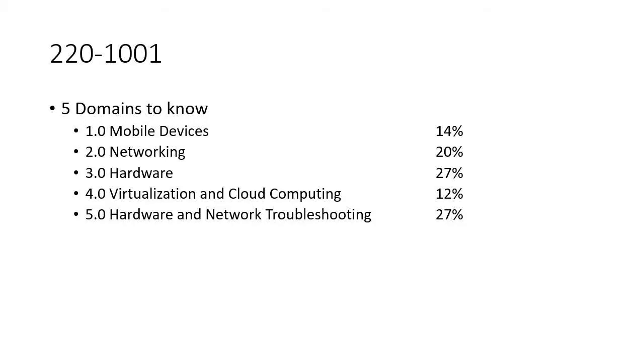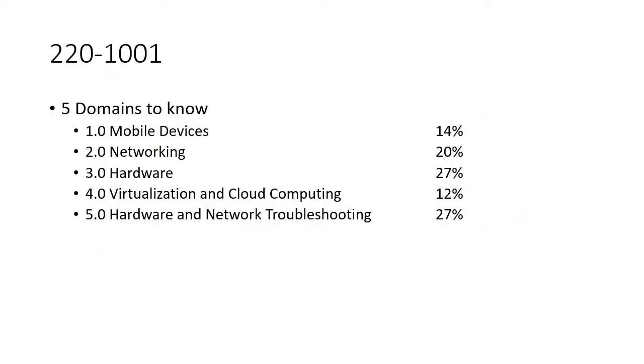I'm talking to those folks who were told yesterday they need to go get A-Plus certified in 30 days. You've got to think — maybe they have family, work, cheerleading at night, soccer games — so 30 days comes pretty quick. So anyway, these are the five domains: mobile devices, networking, hardware, virtualization and cloud computing, and then we'll wrap it up with hardware and network troubleshooting, which is kind of a challenge to teach in a video-on-demand environment without you being right here with me.